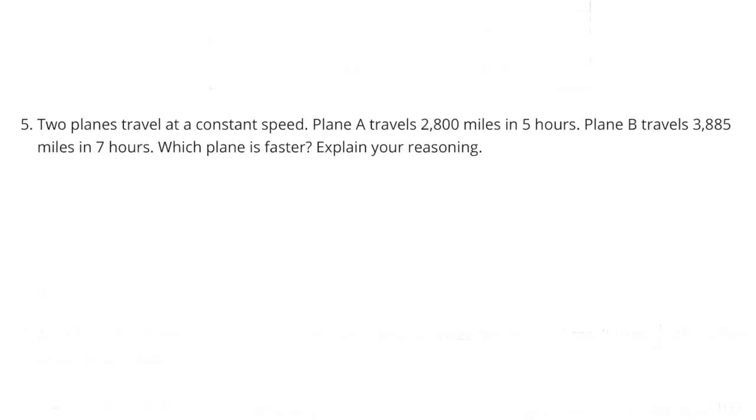Number 5. Two planes travel at a constant speed. Plane A travels 2,800 miles in 5 hours. Plane B travels 3,885 miles in 7 hours. Which plane is faster? Explain your reasoning.